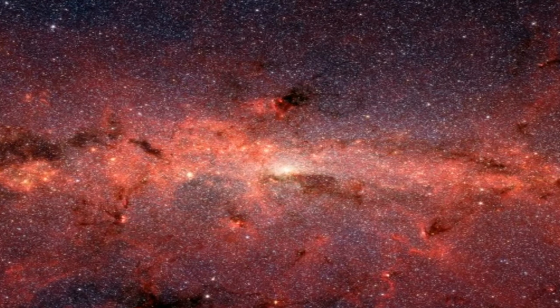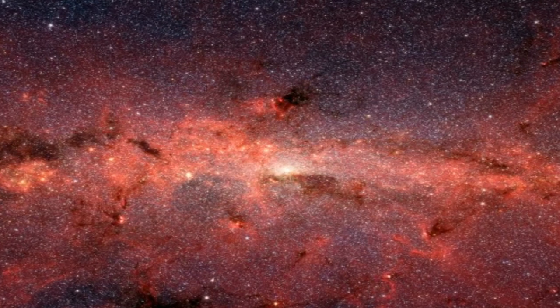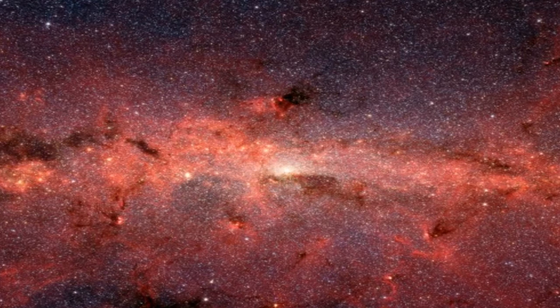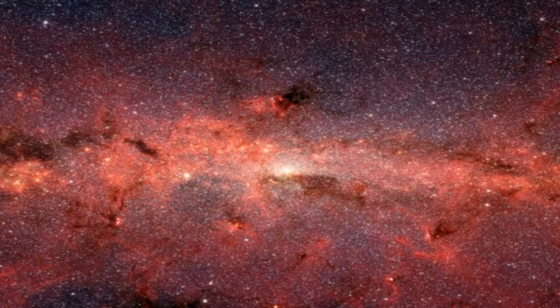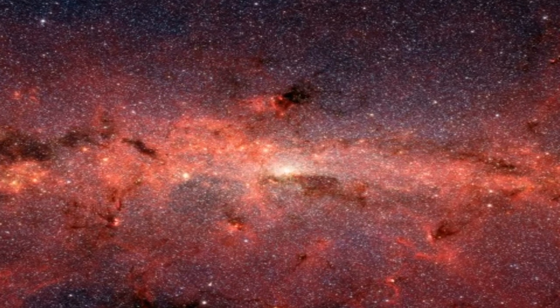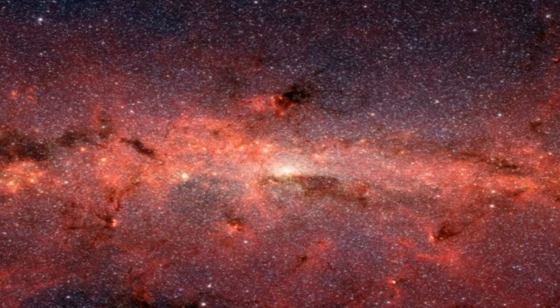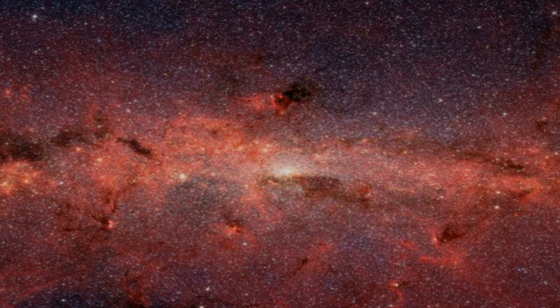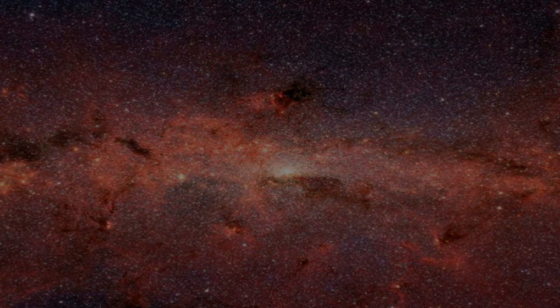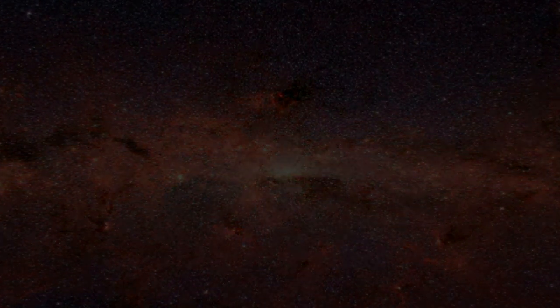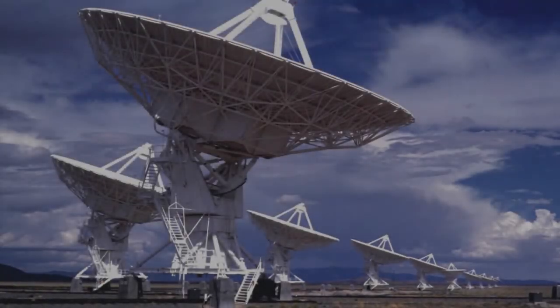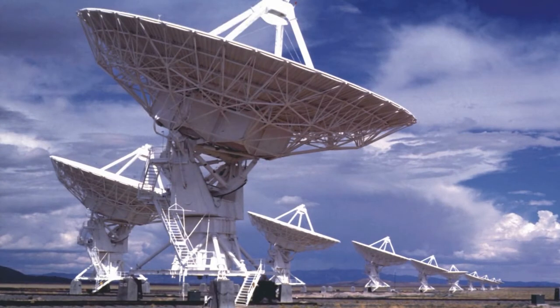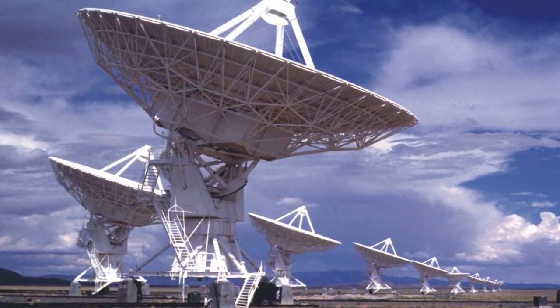Some physicists say the only way the Big Bang could occur is if there were some type of radiation way off in the universe. Then other physicists say, yeah, we found it. It is called steady state radiation, and it indicates that the Big Bang occurred 13.7 billion years ago. But where, how or what? What does this really tell you?